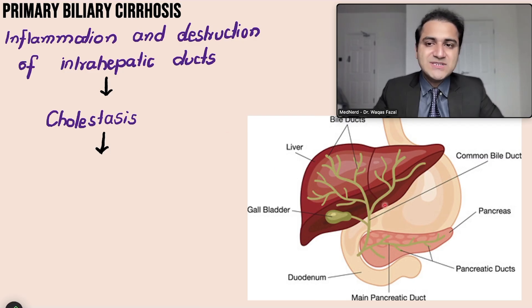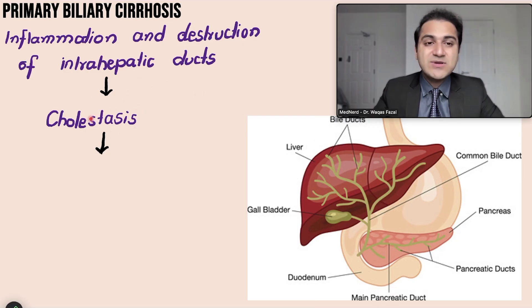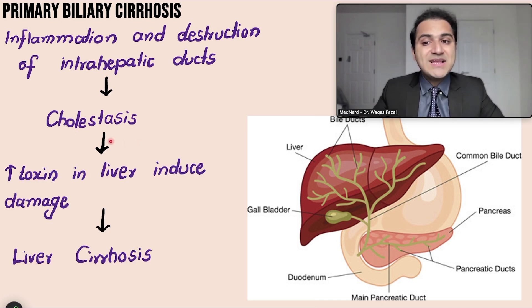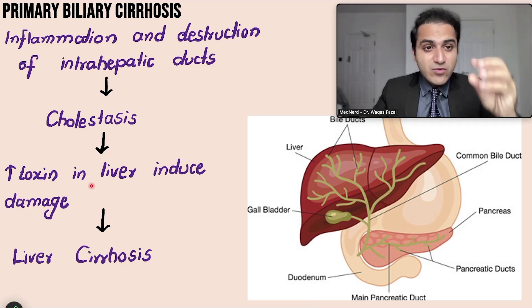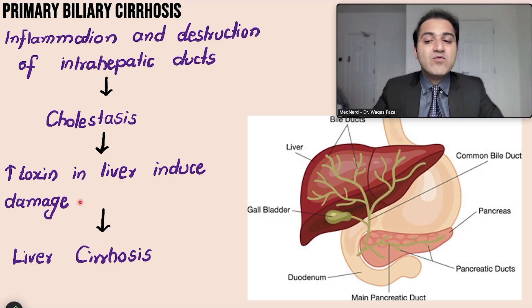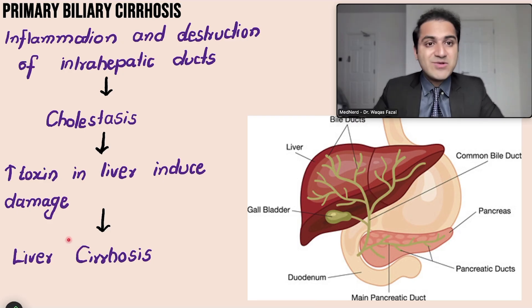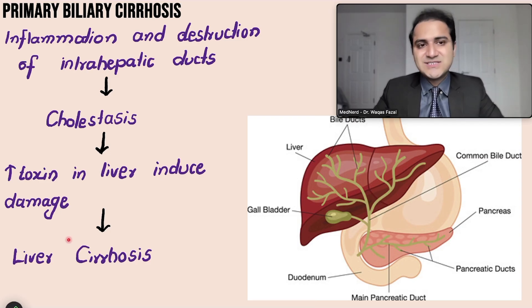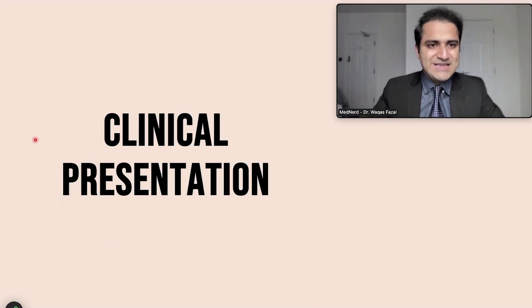Inflammation and destruction of the intrahepatic bile ducts causes cholestasis — bile cannot travel from the liver to the intestines. The toxins that should be excreted accumulate in the liver, inducing damage that results in liver cirrhosis. That is the pathophysiology of primary biliary cirrhosis.